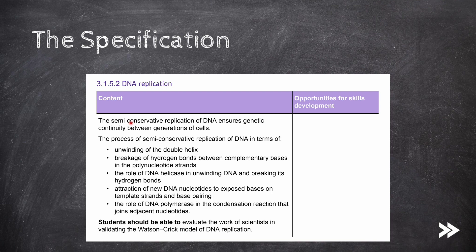First, we should know about semi-conservative replication of DNA and that it ensures genetic continuity between generations of cells. We should know the process of semi-conservative replication in terms of the unwinding of the DNA double helix, the breakage of hydrogen bonds between complementary bases, the role of DNA helicase in unwinding DNA, the attraction of new DNA nucleotides to exposed bases on template strands and base pairing, as well as the role of DNA polymerase in joining new adjacent nucleotides. Finally, we should be able to evaluate the work of scientists in validating the semi-conservative model of DNA replication, which was proposed by Watson and Crick.